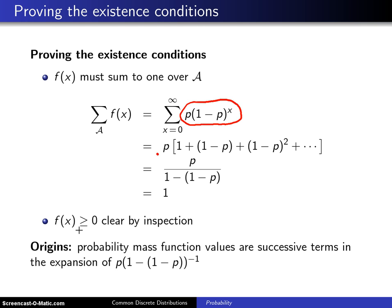And so that completes the proof of the existence conditions. One last thing, the origins of the geometric distribution is the probability mass function values turn out to be successive terms in the expansion of p times 1 minus 1 minus p to the negative 1 power. If you were to expand that particular expression, you would get the various mass values associated with the geometric distribution.